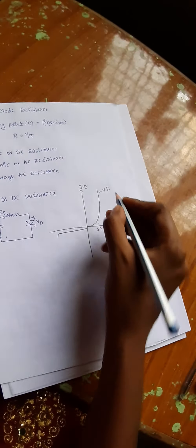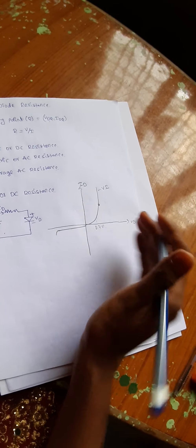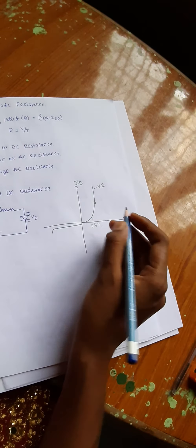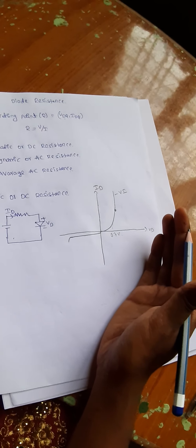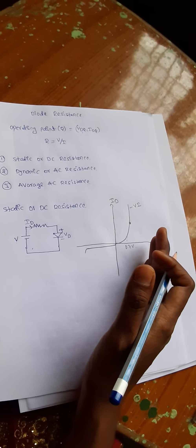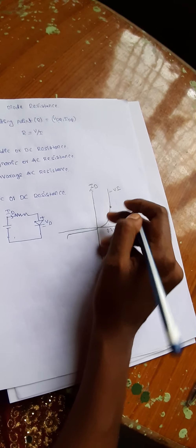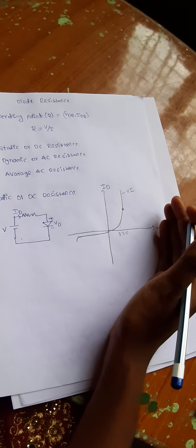The voltage we are applying here is a DC voltage, so let us construct the Q-point. In the previous class we learned about what a Q-point is. After getting a load line for this circuit, we get an operating point using that load line and the VI characteristics. The intersection of the VI characteristics and the load line is the operating point.